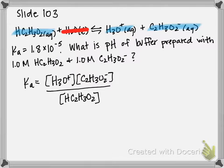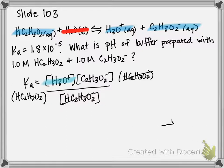Now, ultimately, we're going to use this equation to solve for H3O plus. So, what I'm going to do is I'm going to multiply both sides by HC2H3O2.